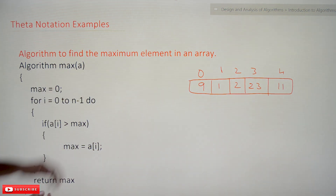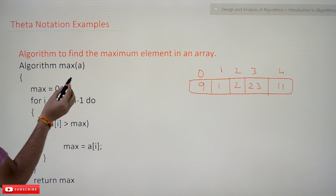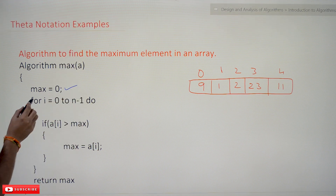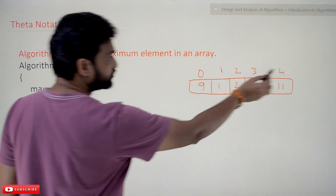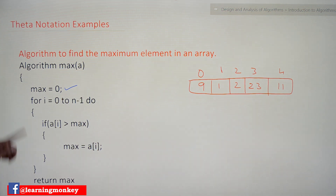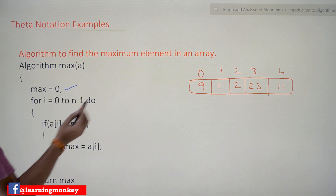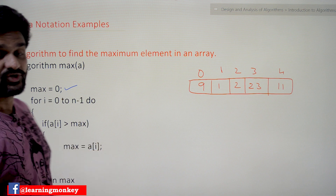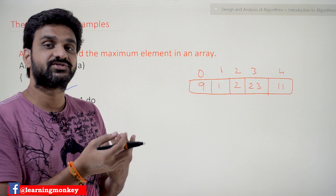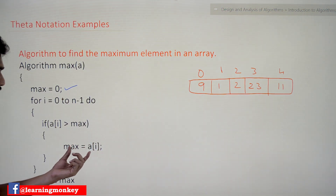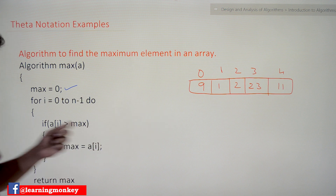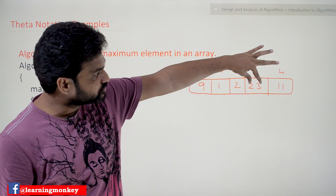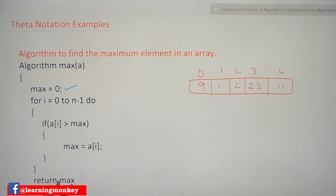This algorithm finds the maximum element in an array. We have considered the first element, taking max as 0. This for loop iterates from 0 to n minus 1 — in this case 0 to 4, so 5 times. In each iteration, it compares a[i]'s value with max. In the first iteration, 9 is compared with max (which is 0). Since 9 is greater than 0, the new max becomes 9. The loop continues, and the maximum value eventually becomes 23 at i equals 3. At the end of the algorithm, max is returned — so 23 is returned.